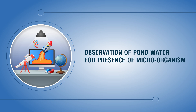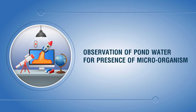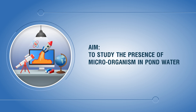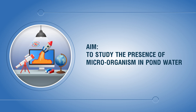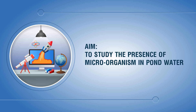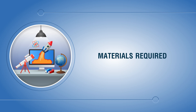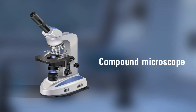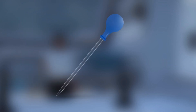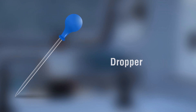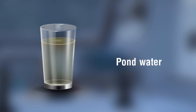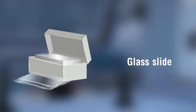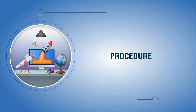Observation of pond water for presence of microorganisms. Aim: to study the presence of microorganisms in pond water. Materials required: glass tumbler, compound microscope, dropper, pond water, glass slide, cover slip.